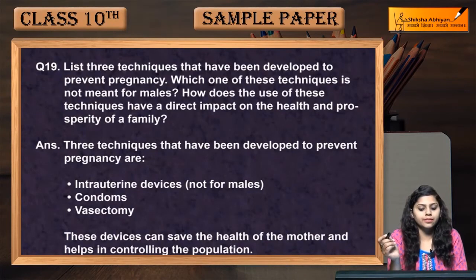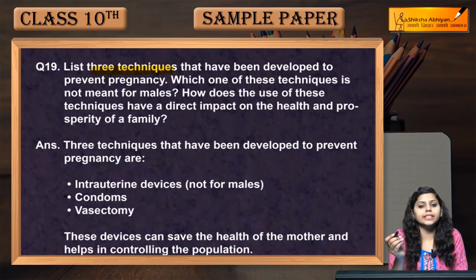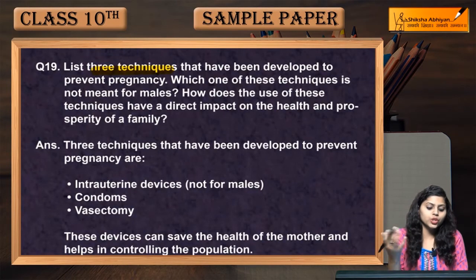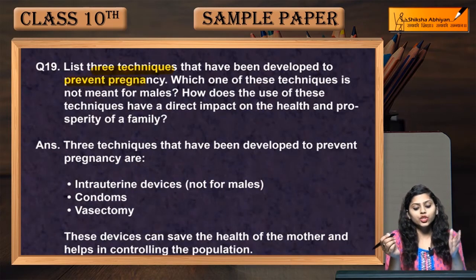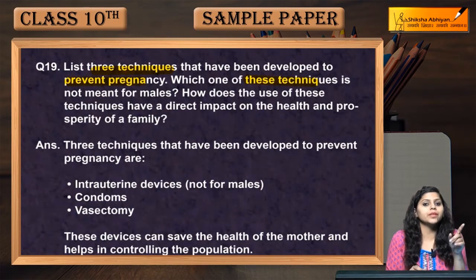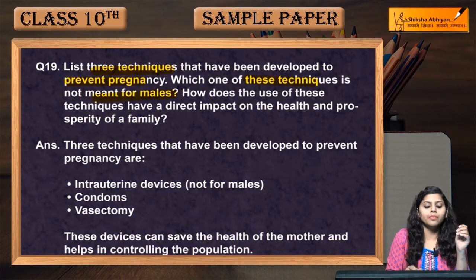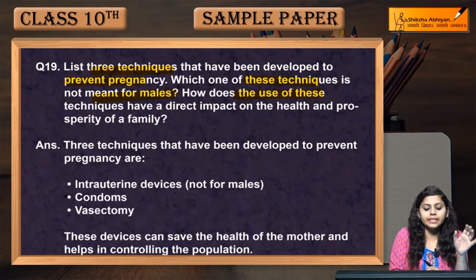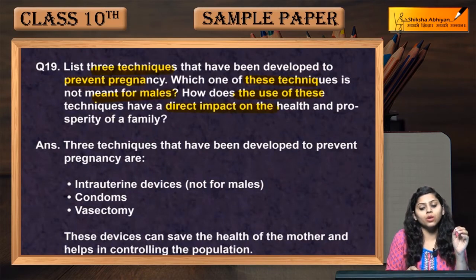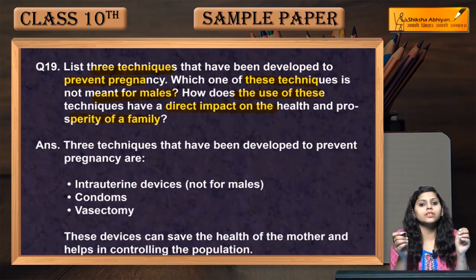Question 19: List three techniques that have been developed to prevent pregnancy. Which of these techniques is not meant for males? How does the use of these techniques have a direct impact on the health and prosperity of a family?